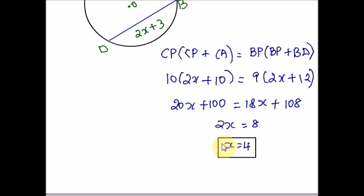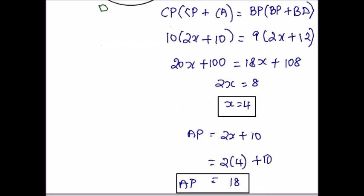The actual question is asking us to find AP. AP equals 2X plus 10. Substitute the value of X. So 2 times 4 plus 10. Therefore, the value of AP is 18. That's it for this example.